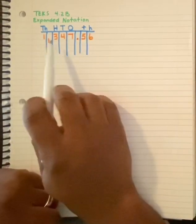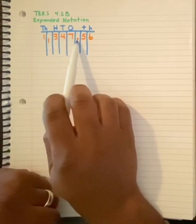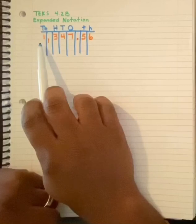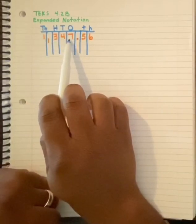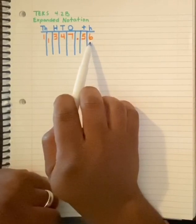So we would call this one thousand three hundred forty seven and fifty six hundredths, or one thousand three hundred forty seven dollars and fifty six cents.